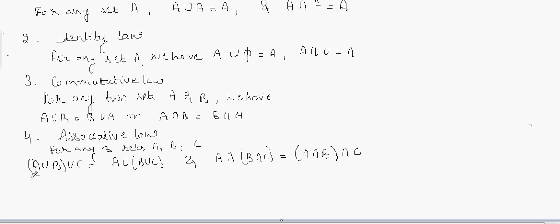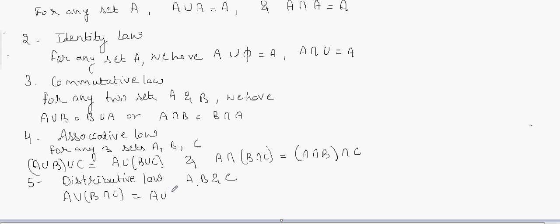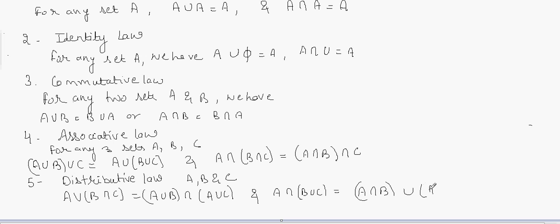The next law is the Distributive law. This law says that for any three sets A, B and C, we have A union (B intersection C) is equal to (A union B) intersection (A union C), and A intersection (B union C) is equal to (A intersection B) union (A intersection C). This means that if we have to perform union and intersection simultaneously on three sets, we can distribute in this way.